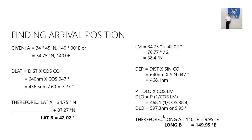Using the middle latitude sailing formula, P equals D-lo times cosine of middle latitude. Cross-multiplying: D-lo equals P times one over cosine of middle latitude. So 468.1 times one over cosine 38.4 degrees gives D-lo of 597.3 nautical miles, or 9.95 degrees. Since longitude A is 140 East plus 9.95 degrees difference of longitude, longitude B is 149.95 degrees East.